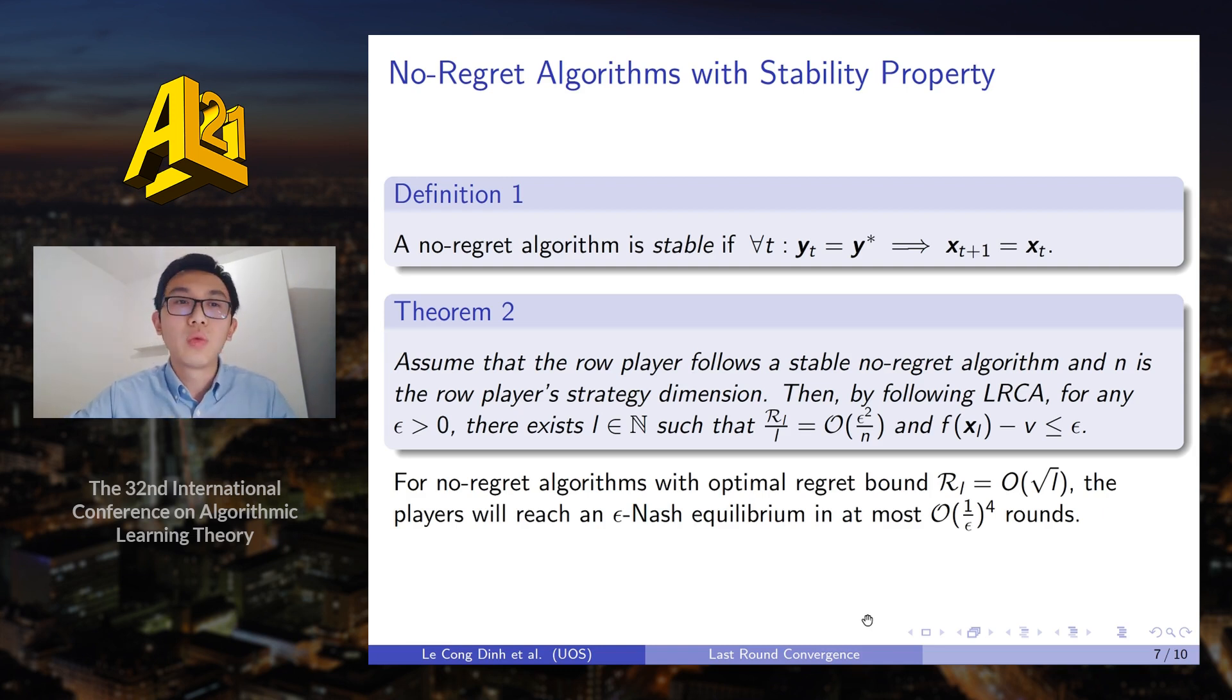So with stability property, we come up with the first result, which is saying that given the row player follows a stable no regret algorithm, if the column player follows LRCA, then the strategy of both players will come arbitrarily close to the min-max equilibrium when the rate depends on the regret bound of the row player's strategy.